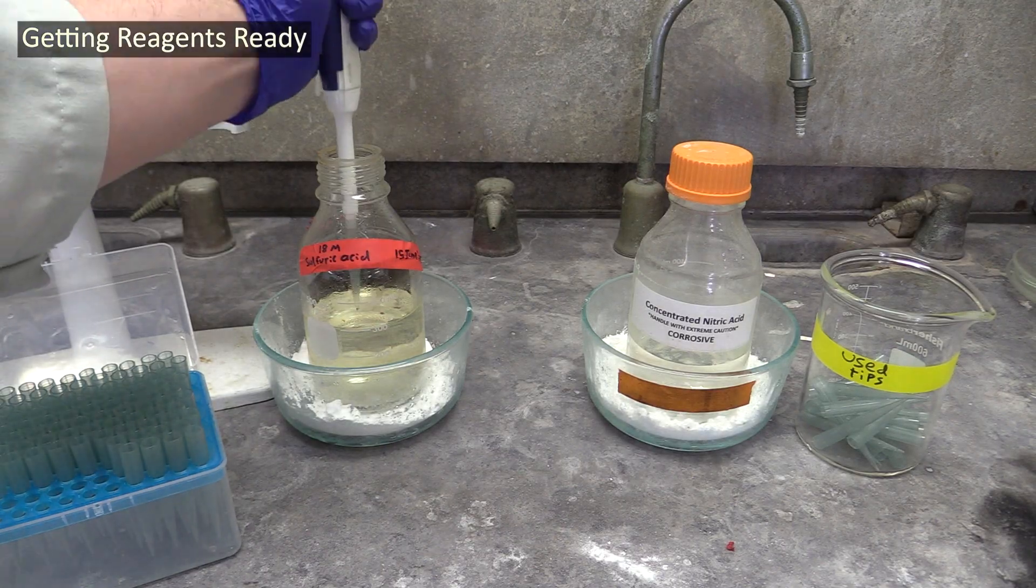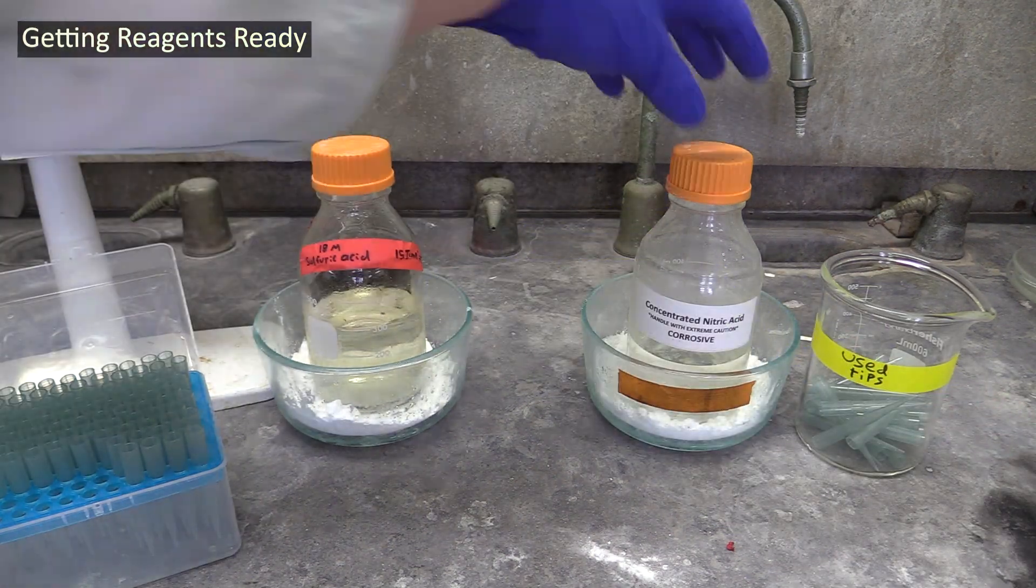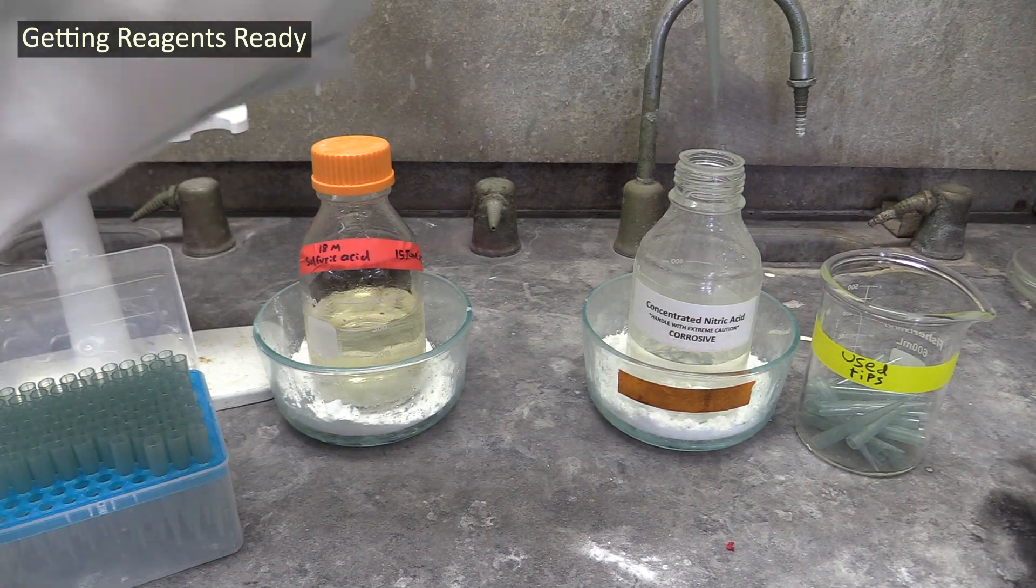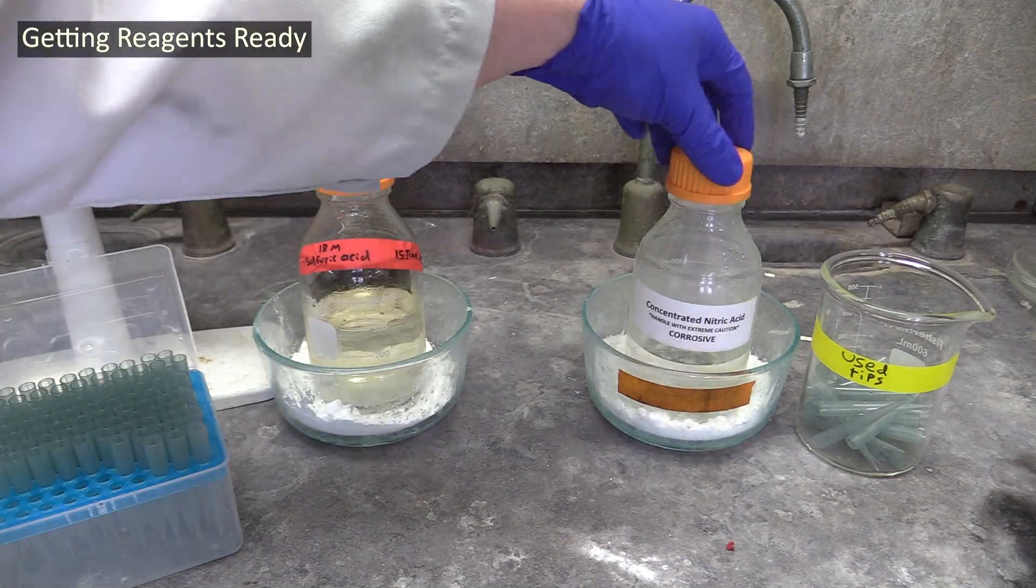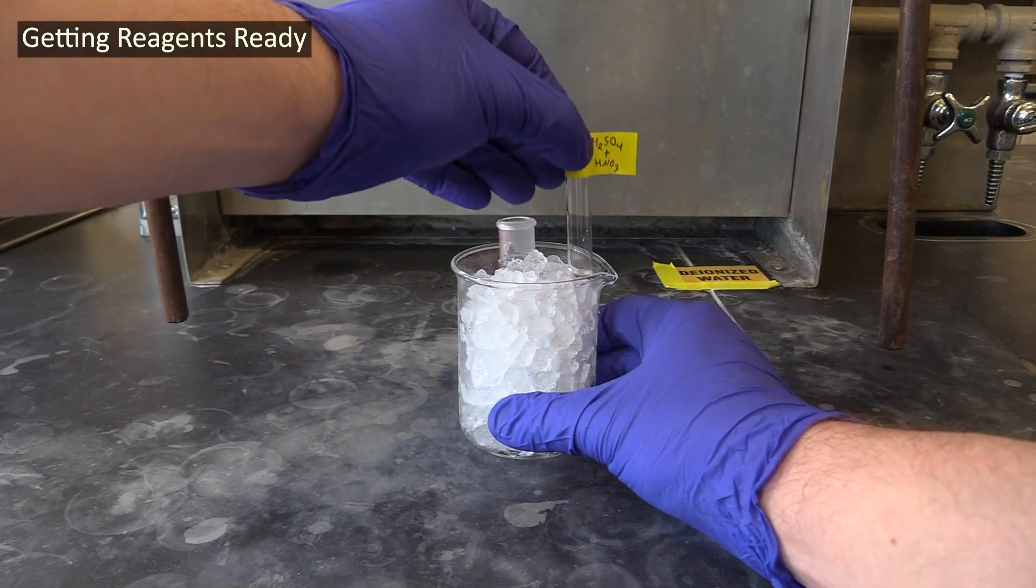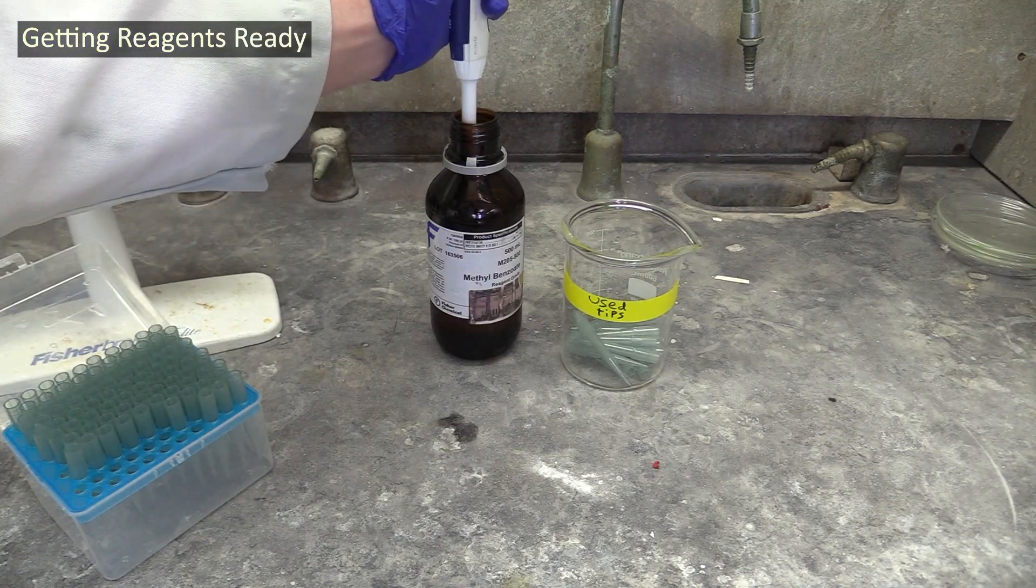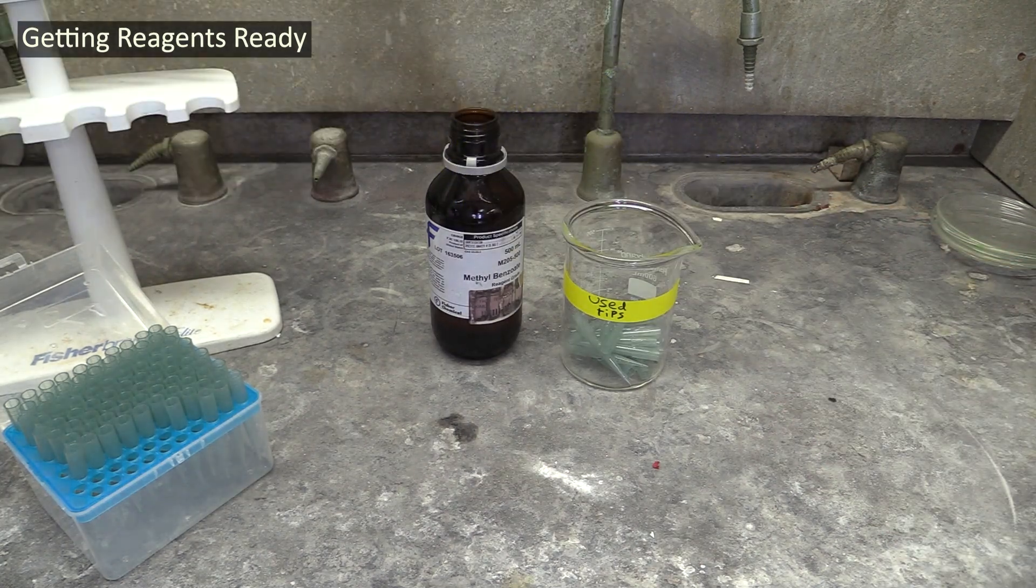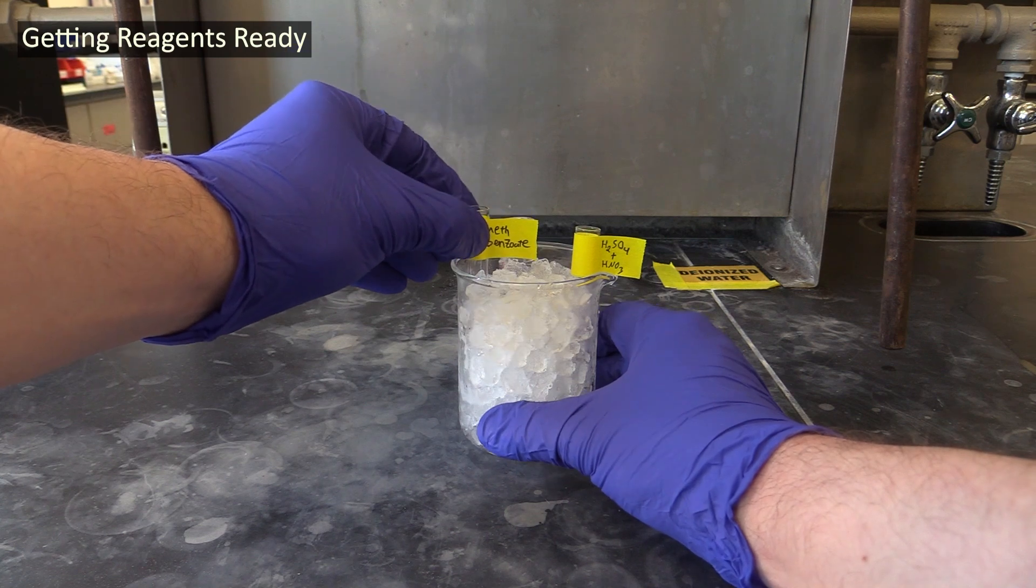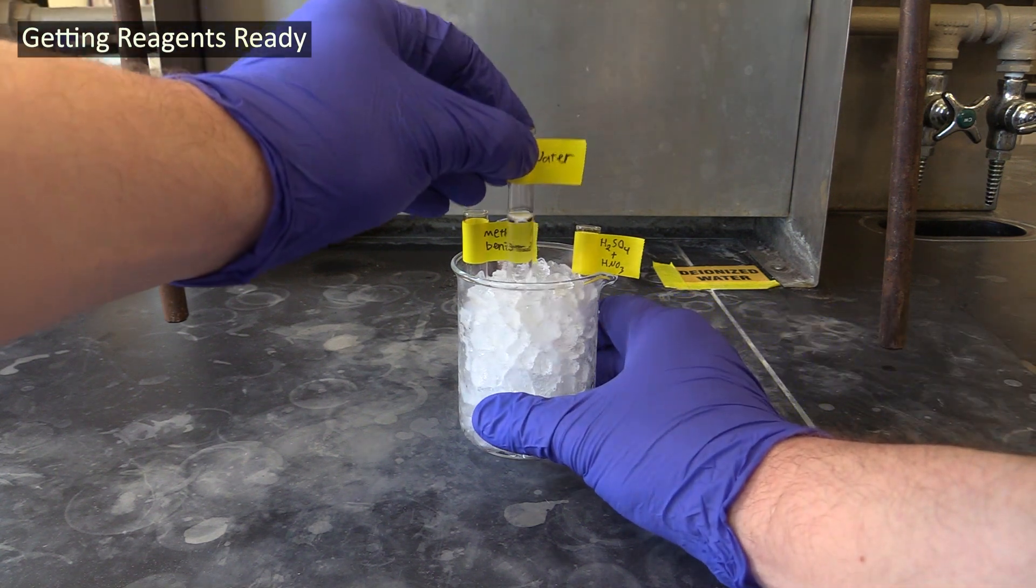Next, you'll combine some sulfuric acid and nitric acid in another container, and place these acids on ice too. You'll also need to put some methyl benzoate in yet another container, and put it on ice. And then you'll add some deionized water to yet another container, and, you guessed it, put it on ice.